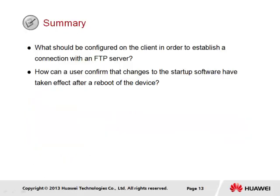In summary, we have a couple of questions. First: what should be configured on the client to establish a connection to an FTP server? The client must be able to reach the FTP server over IP, and therefore must have a valid IP address configured on the interface through which the FTP server is reached. Second: how can a user confirm that changes to the startup software have taken effect after a reboot? By using the 'display startup' command, we can confirm that the new image has been applied and is currently active, identified by the .cc extension. This image should also be visible as part of the device startup process, as seen in the navigating the CLI section.